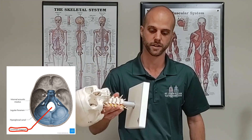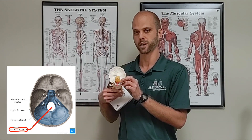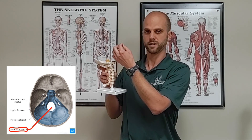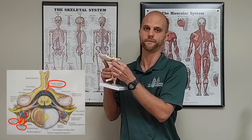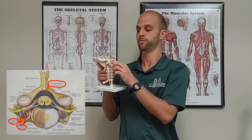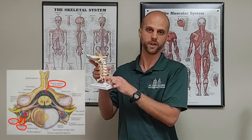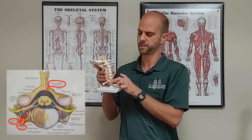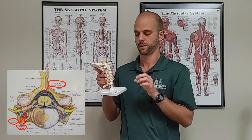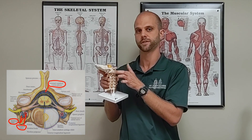The venous plexus exits the cranium through the foramen magnum, which is this very large hole at the base of the cranium here. I'm going to show you on another model — it's a little easier to see. So here is the foramen magnum, this very big hole at the base of the cranium. And the venous plexus exits the cranium through this foramen magnum and then it becomes the vertebral veins, which run down right alongside each of these vertebrae of the neck. On the side of each of these vertebrae is a little hole.